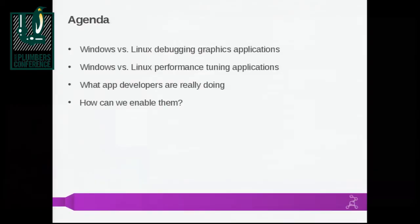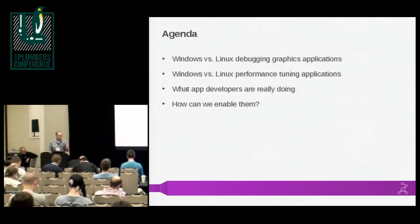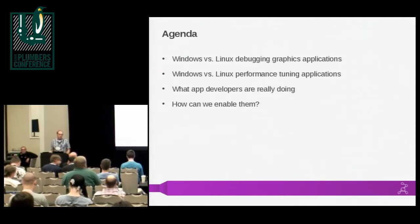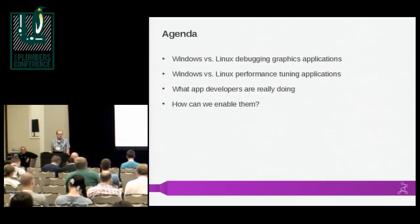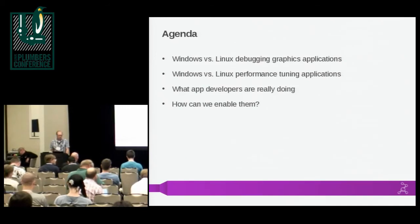I'm going to start by going through some brief comparisons of Linux and Windows and what's available on each, both for debugging and for performance tuning. I'll talk about some problems that developers encounter universally in both environments and what they're doing since nobody has actually given them a pony yet, and then what we can do to enable them to go further on Linux.